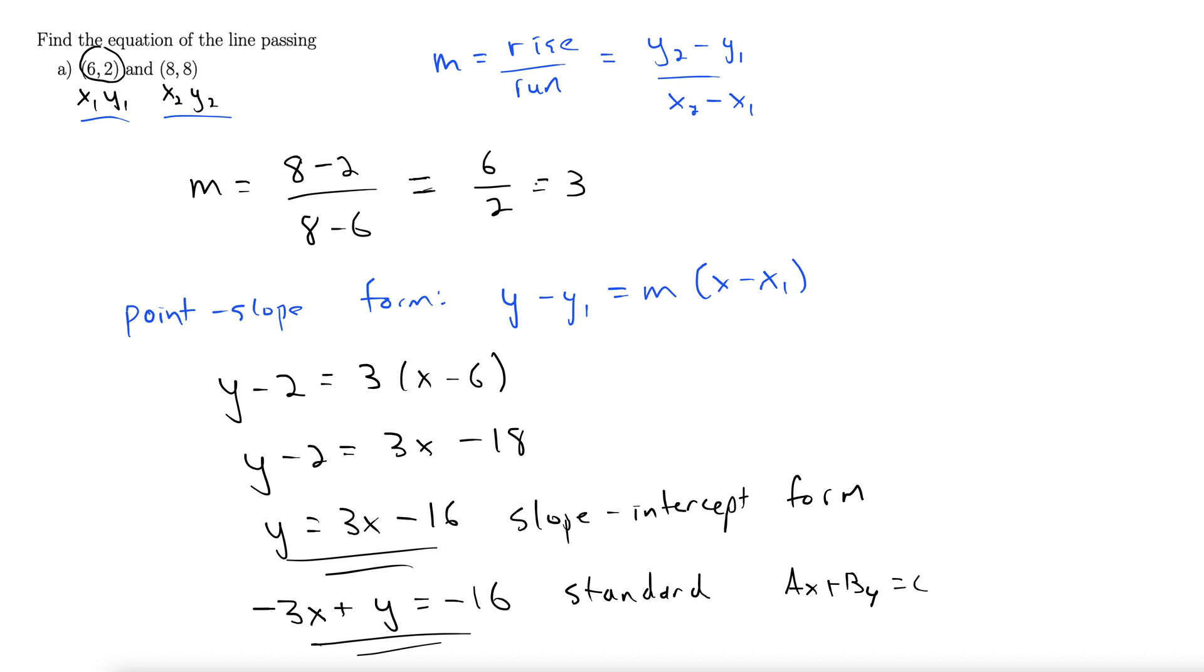Just to demonstrate that we can plug in the other point just as easily, let's do it. Now I'm still using our point-slope form. I'm going to plug in (8, 8). Y minus 8 equals m, and it's 3 still, times x minus 8.